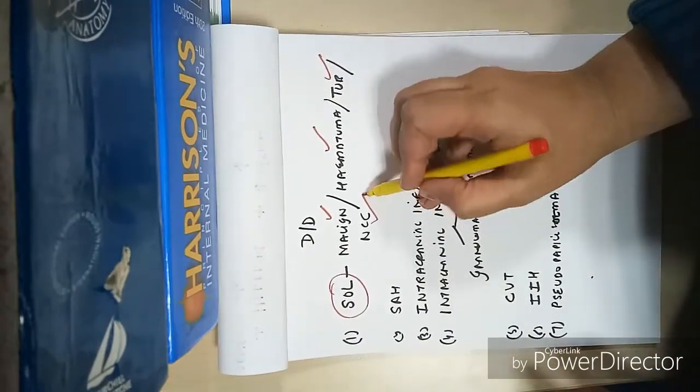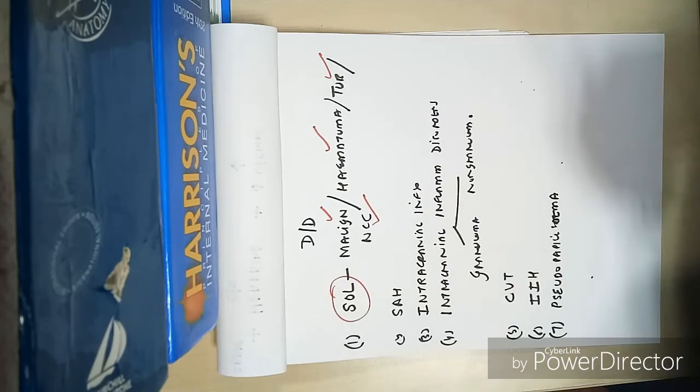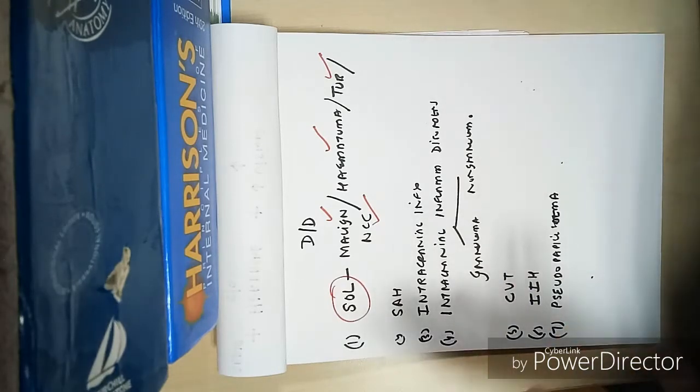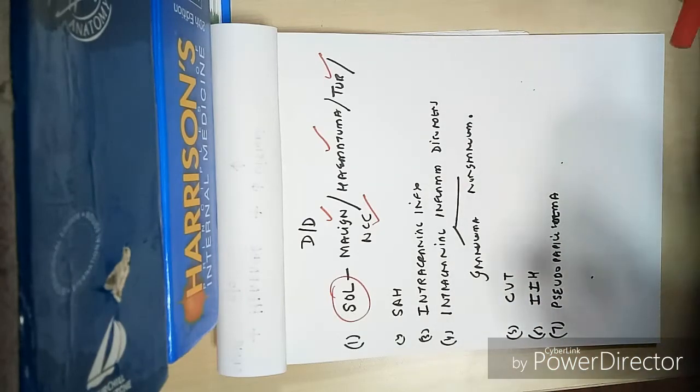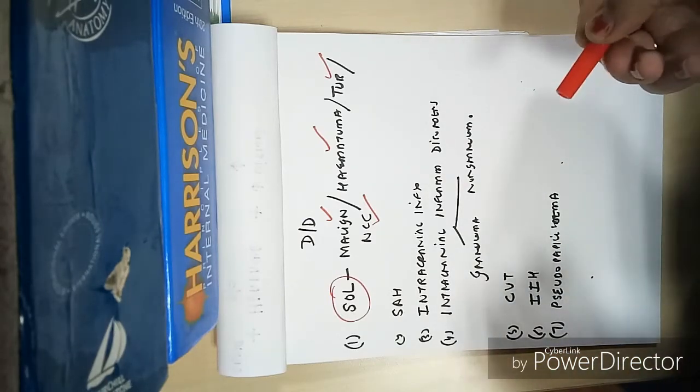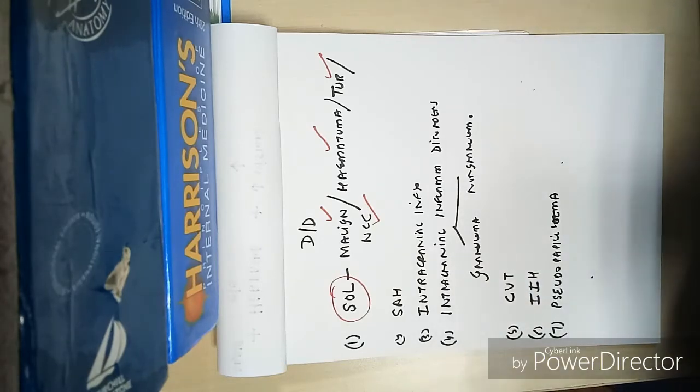Second possibility - you can rule out structural lesion. Secondly, bleed, any bleed like SAH, because in this patient there was change in the character of the headache. Though it was not a thunderclap headache, the change of character was present. But decreased vision cannot be explained on the basis of SAH.